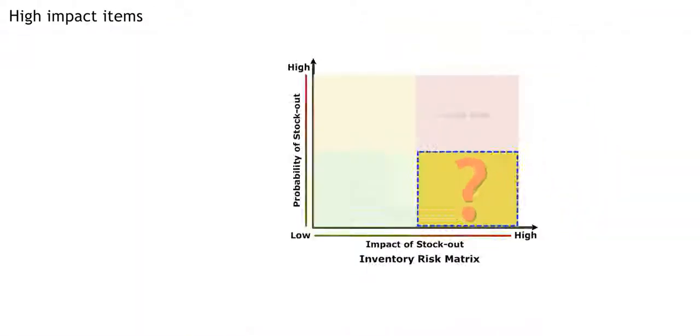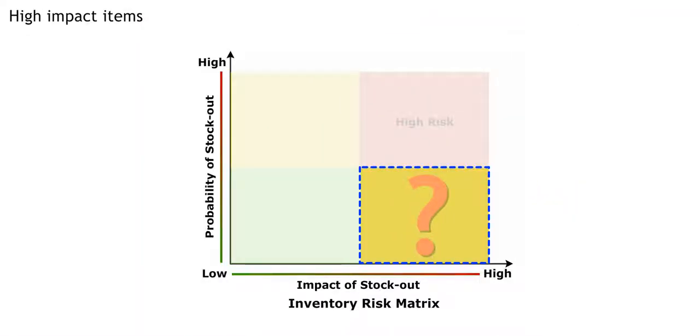What is the box called when there is a low probability of a stockout, but high impact if it does happen? Those are called high impact items.